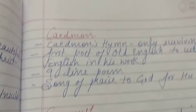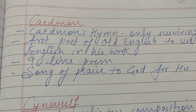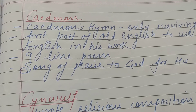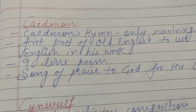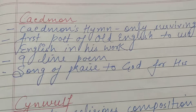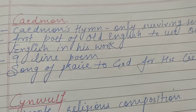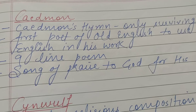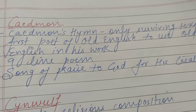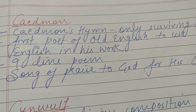Next is Caedmon. Caedmon was the earliest writer of Old English literature who used the English language. Bede Old English ke pehle writer the but wo Latin mein likhte the, but Caedmon Old English ke aise writer the jo Old English language mein likhte the. Caedmon's Hymn bahut hi zyada popular hai — sirf yahi unka ek surviving text hai. Yeh nine-line poem hai jisme Caedmon ne God ki praise ki hai unki creation ke liye — unhone earth banayi, heaven banayi man ke enjoyment ke liye.